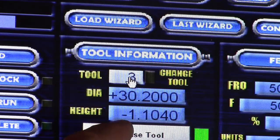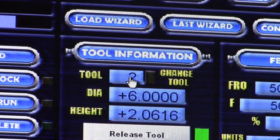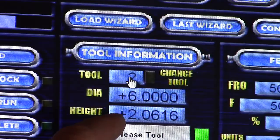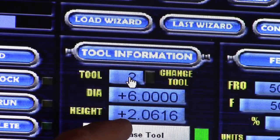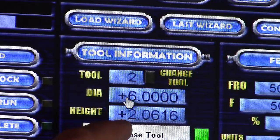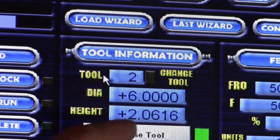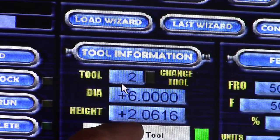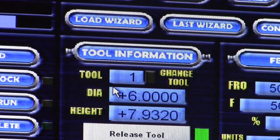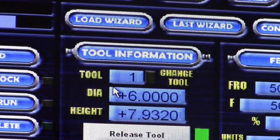So if I change the tool number two, that was a bit longer, so that's two millimeters in offset. And tool number one, this one was zero before we started. Tool number one, 7.93.